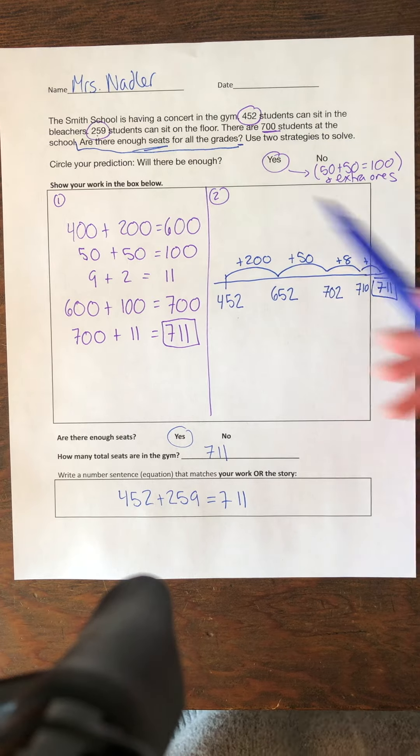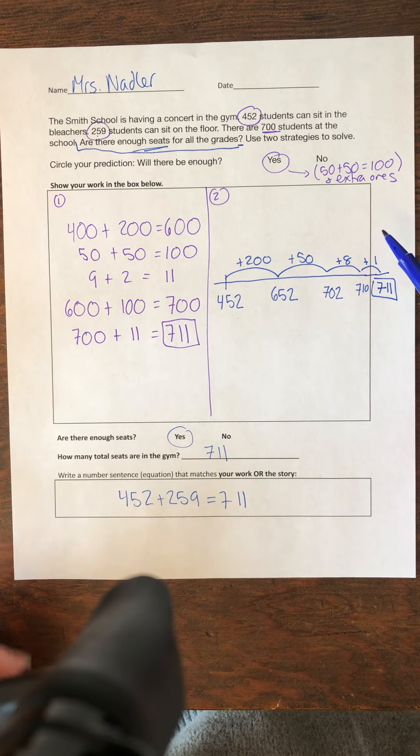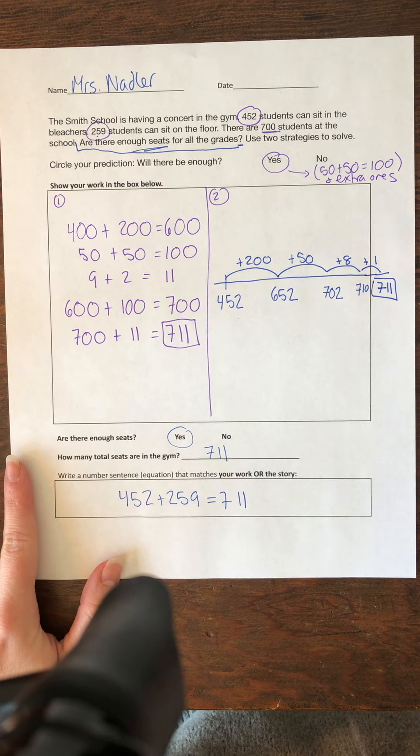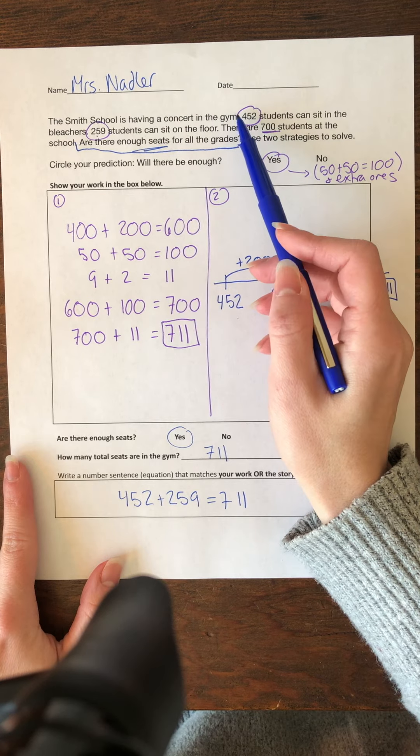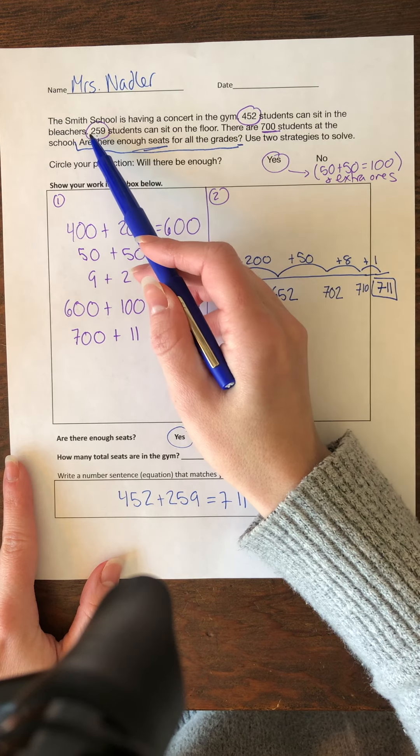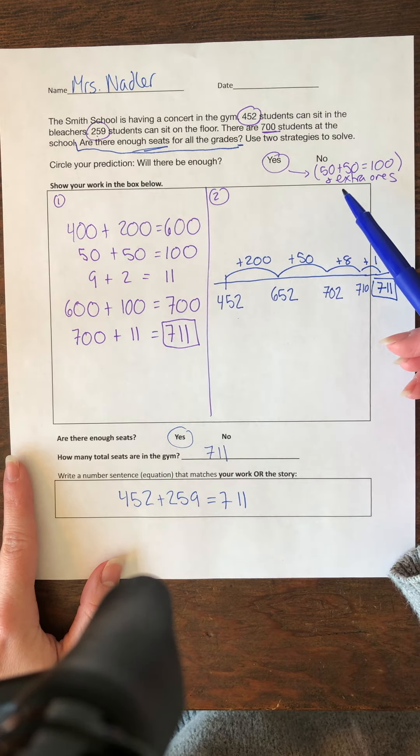Then use two strategies. So here's your prediction. Will there be enough? And I started looking and I was just doing some quick mental math and I see my hundreds and I said 400, 500, 600. Okay, well that wouldn't be enough.